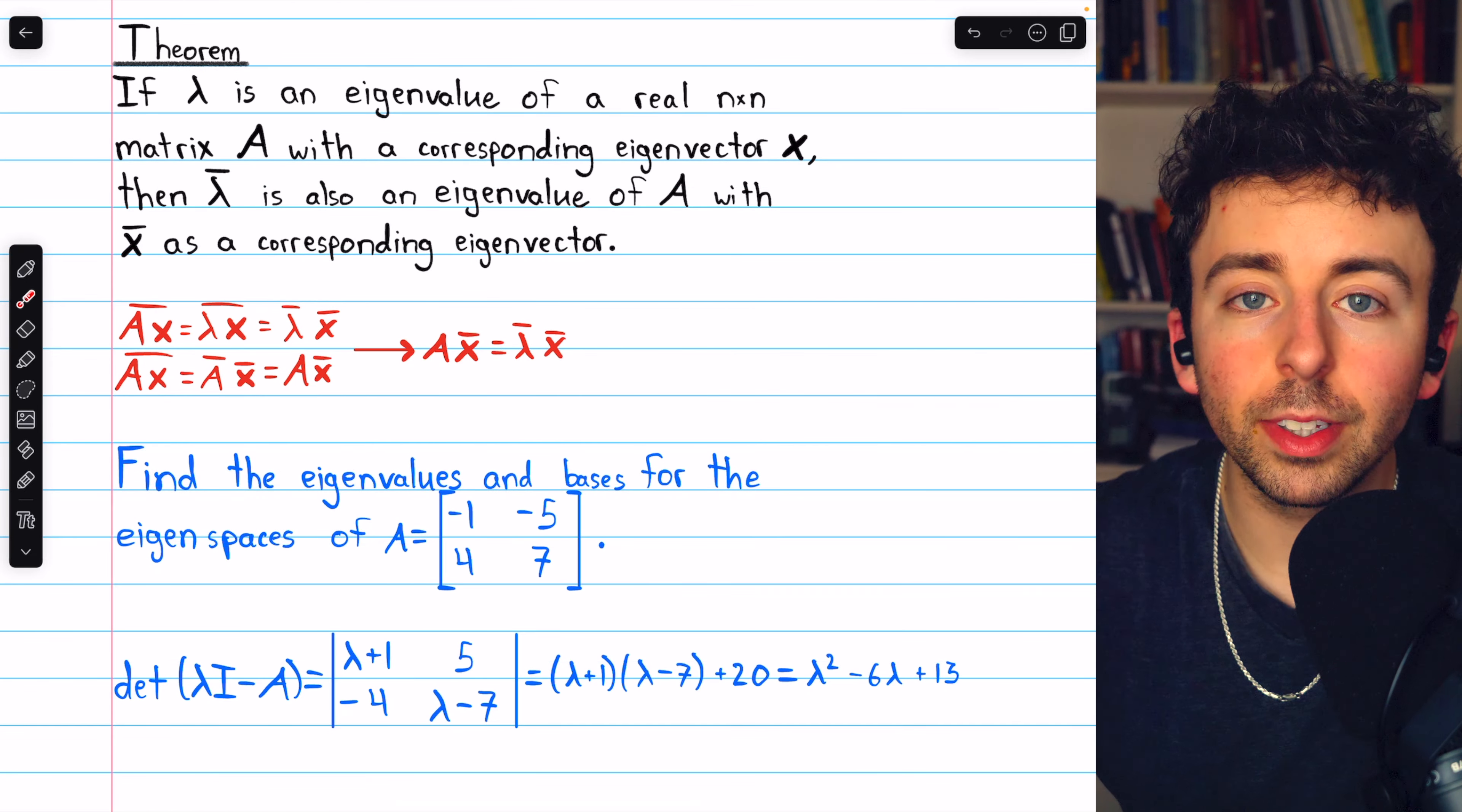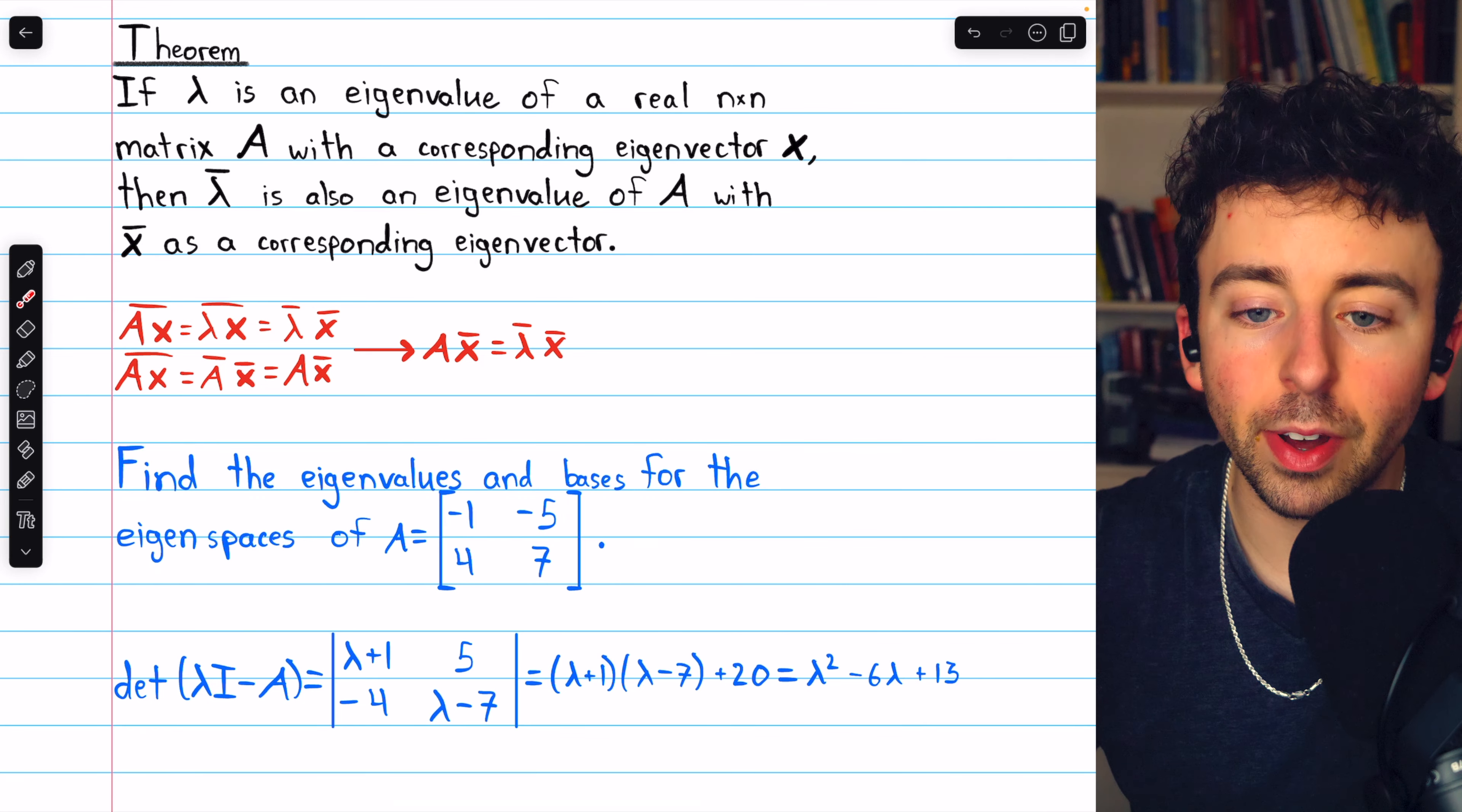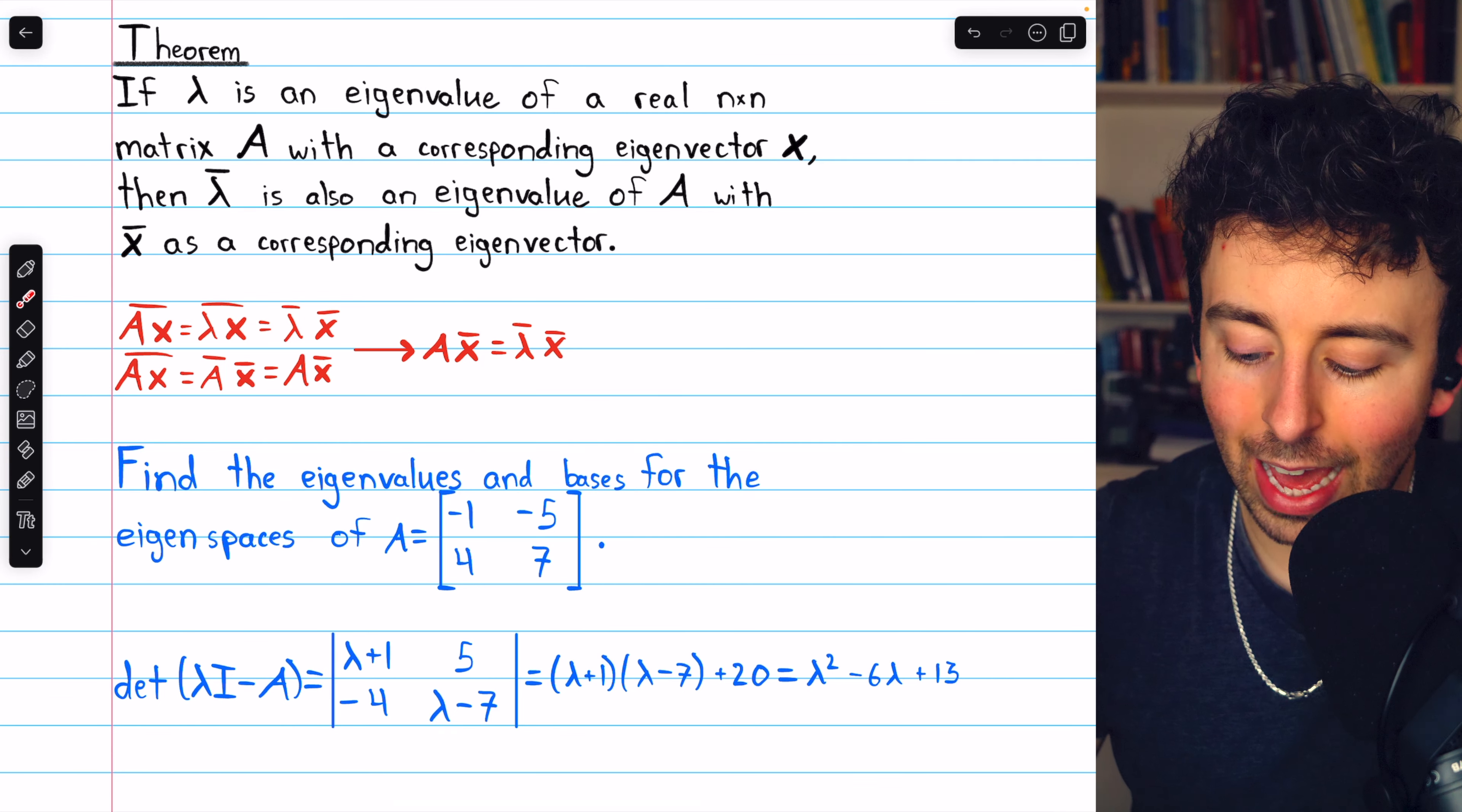Let's go through a quick example to see this result in action. We'll find the eigenvalues and bases for the eigenspaces of this real 2×2 matrix. We, of course, begin by finding the eigenvalues. So, we take the determinant of lambda I minus A, which is this, and that leads to this characteristic polynomial.